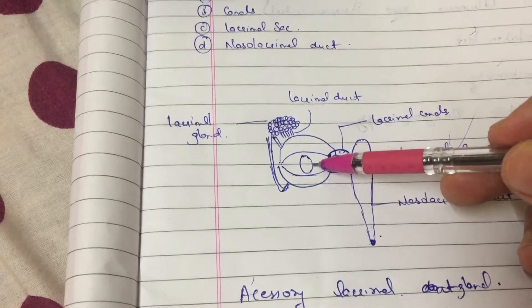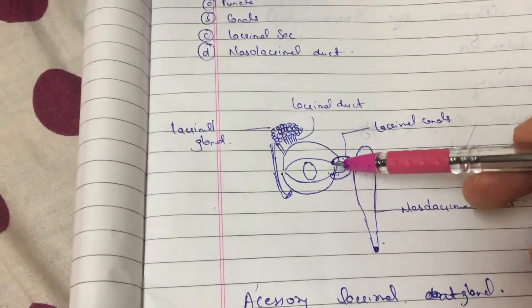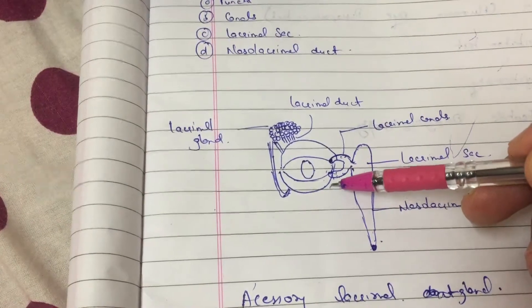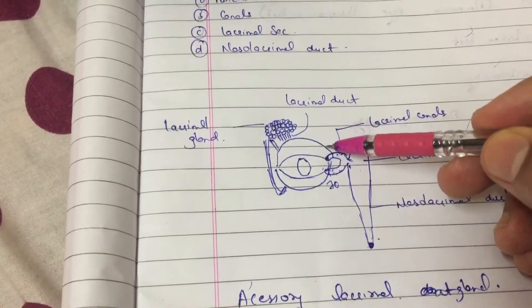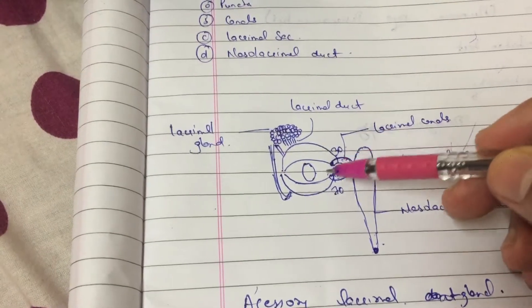Now, when the tear film is taken from the puncta, you should always remember that the lower canal drains about 70% and the upper canal drains only 30% of the tear films.